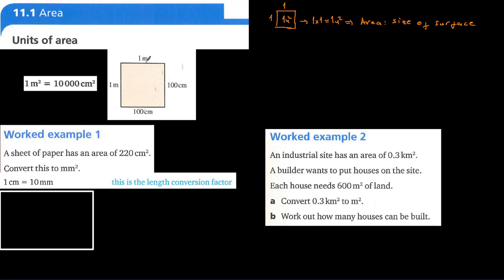As you can see here, the area of this square is one times one, which equals one meter square. At the same time, it is 100 centimeters times 100 centimeters, which equals 10,000 centimeters square. So one meter square is equal to 10,000 centimeters square, because one meter equals 100 centimeters.